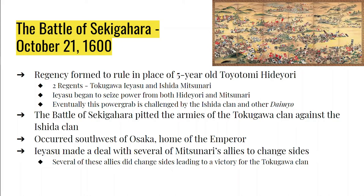The Battle of Sekigahara on October 21st, 1600 pitted the Tokugawa clan and their allies against the Ishida clan and their allies. The Tokugawa were outnumbered — about 120,000 to 85,000 troops. It happened on a plain southwest of Osaka, right after a heavy downpour, with fog everywhere, and the two armies bumped into each other almost by accident. What Ishida Mitsunari didn't know was that Ieyasu had secretly made a deal with some of Mitsunari's allies — promising land and power if they switched sides during the fight. During the battle, one of those allies changed sides, and that essentially won the battle for Tokugawa Ieyasu.